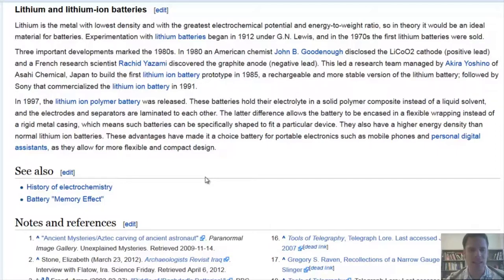In 1997, the lithium-ion polymer battery was released. These batteries hold their electrolyte in a solid polymer composite instead of a liquid solvent, and the electrodes and separators are laminated to each other. The latter difference allows the battery to be encased in a flexible wrapping instead of a rigid metal casing, which means such batteries can be specifically shaped to fit a particular device. They also have a higher energy density than normal lithium-ion batteries. These advantages have made it a choice battery for portable electronics such as mobile phones and personal digital assistants, or PDAs, as they allow for more flexible and compact design.